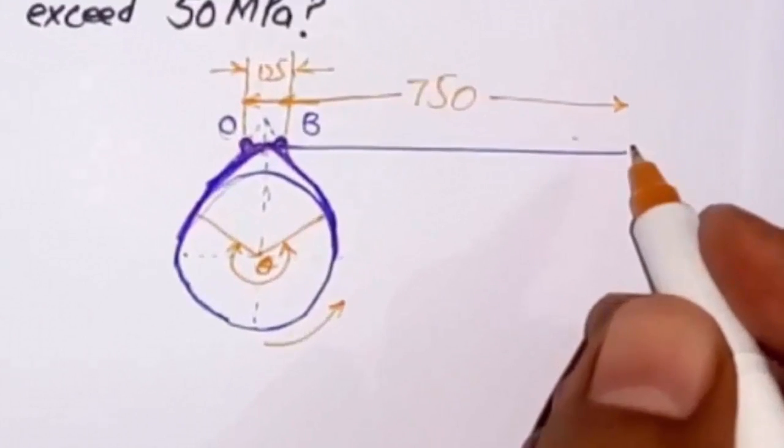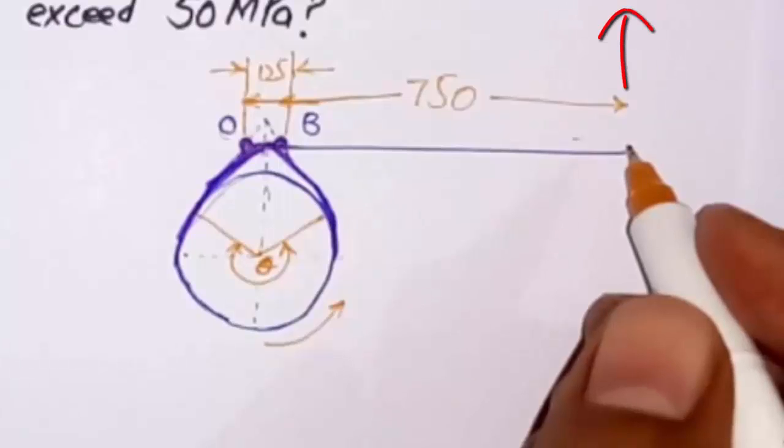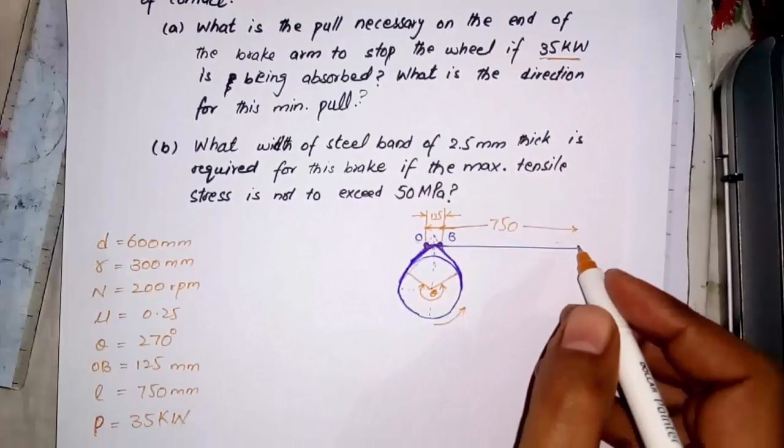First thing first, the direction of pull force. When we pull the lever upward the band will grab the drum and it would be not possible in case of pulling the lever downward. So, the applied force would be upward.